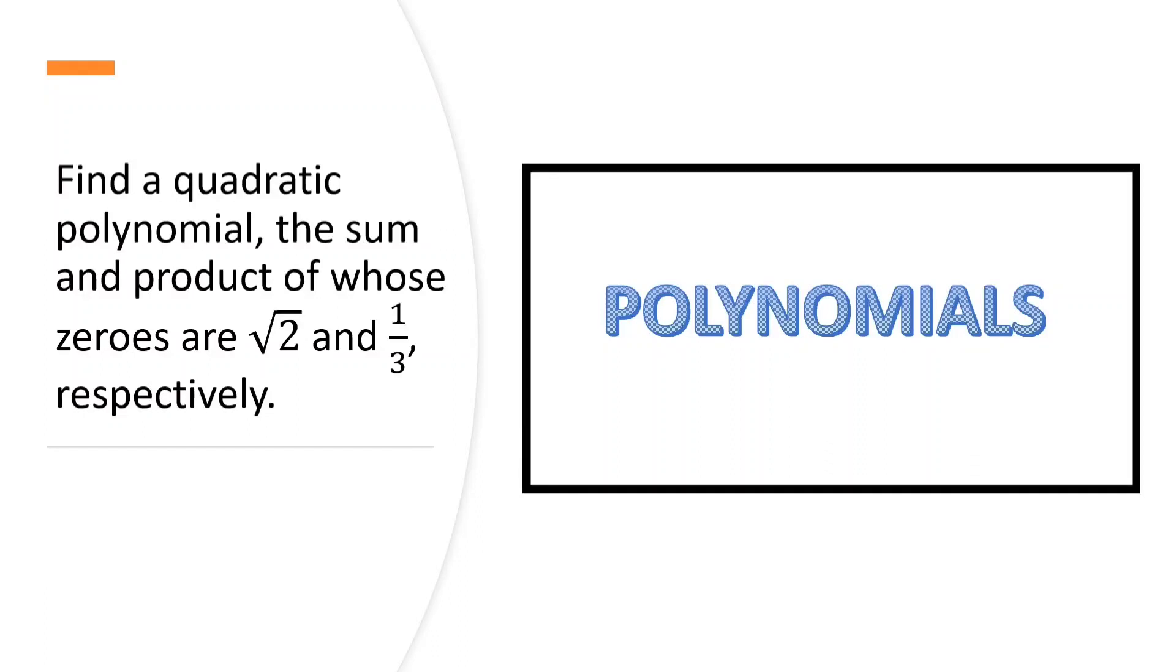Find a quadratic polynomial, the sum and product of whose zeros are square root of 2 and 1 by 3 respectively.